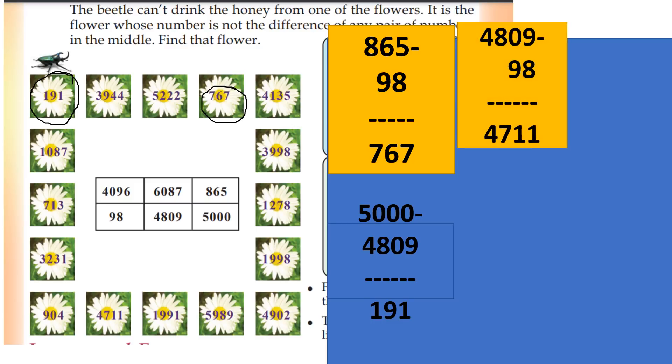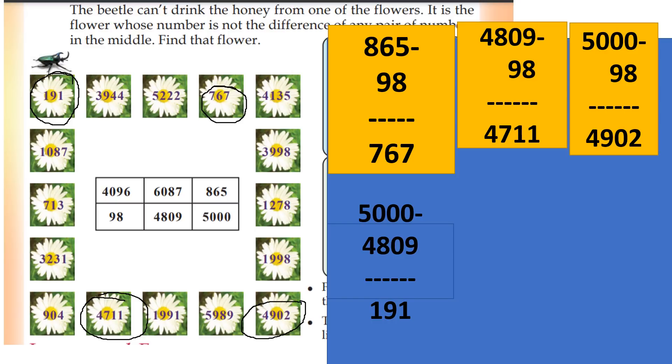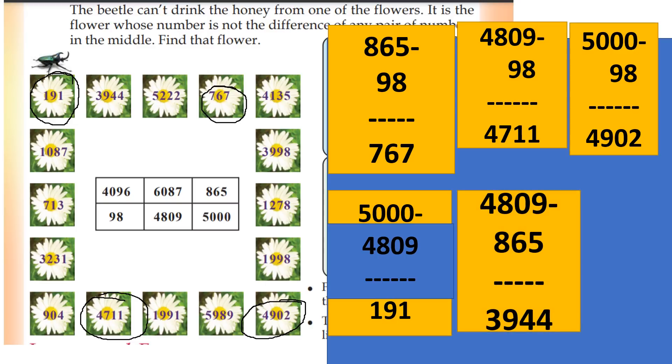4809 minus 98 is 4711. 5000 minus 98 is 4902. And 4809 minus 865 is 3944.